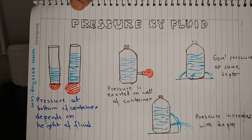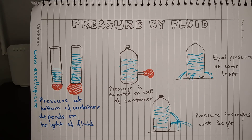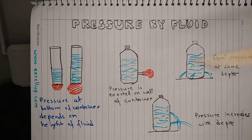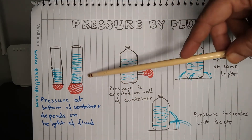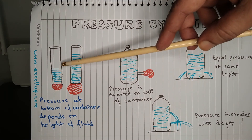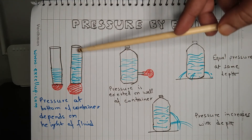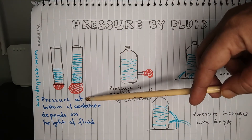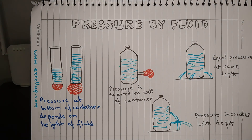Pressure by fluid: anything which has mass can exert pressure, so fluids like air or water also exert pressure. Here are two hollow jars with balloons tied at their bottoms. One jar contains less water than the other, so the height of the water column is lower. Because of this, the balloon on the jar with more water is inflated to a greater extent — this happens because of the greater pressure created by the taller water column.